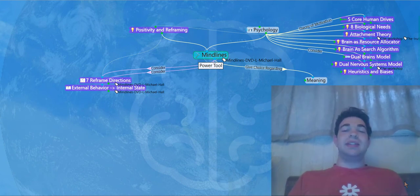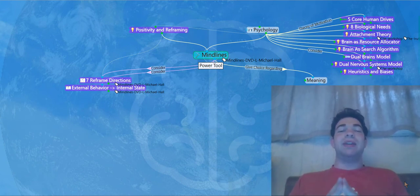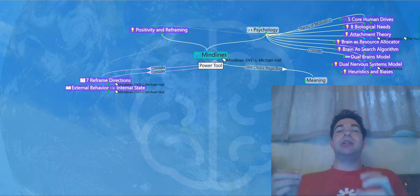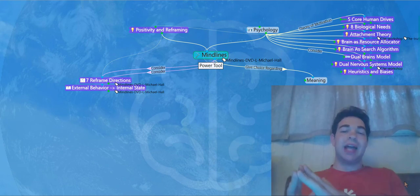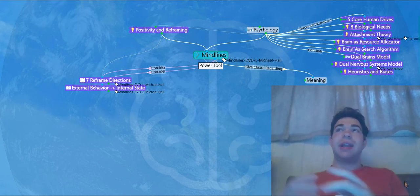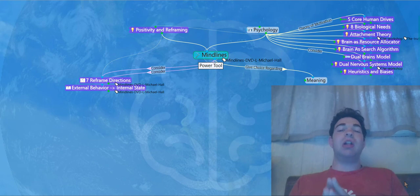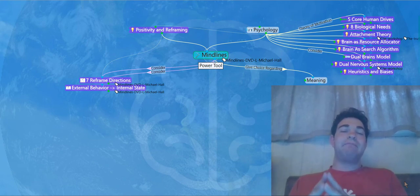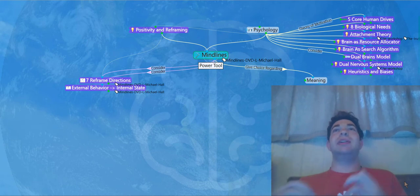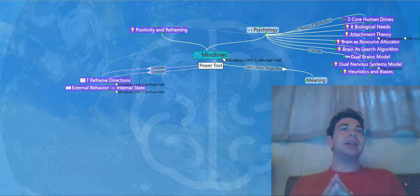Hi, this is Matt. This is Mental Model Monday number 19. Today we're going to talk about MindLines, which is an NLP model developed by L. Michael Hall. It's adapted from the sleight-of-mouth model and has added some additional nuance and understandings of how reframing works.